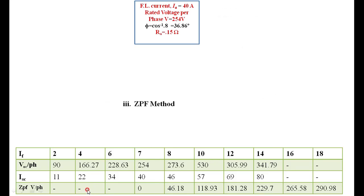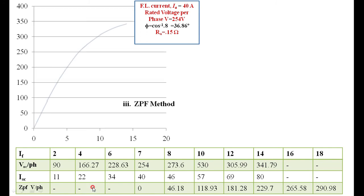The last method is the ZPF method, which requires two characteristics: the open circuit characteristics and the ZPF characteristics. Draw the OCC and ZPF curve from the given data. Then draw the air line, which is the tangent to the initial (unsaturated) portion of the OCC.